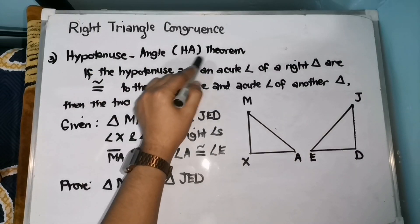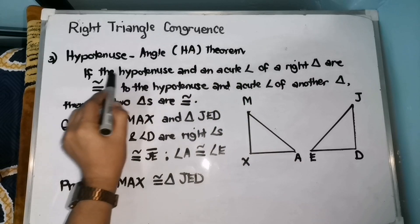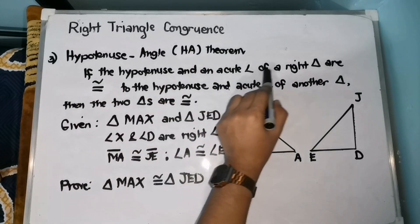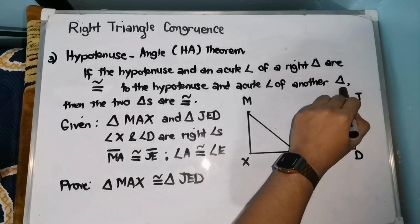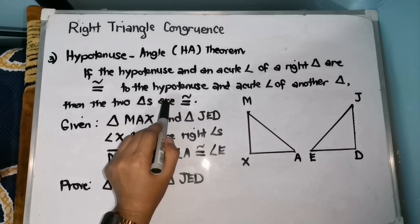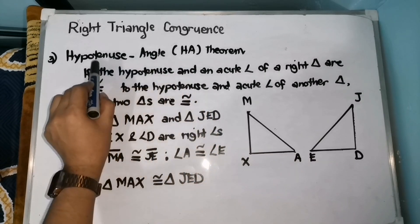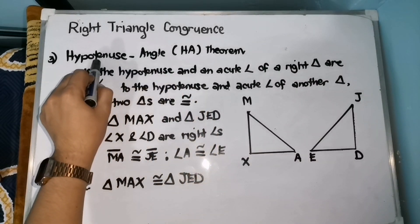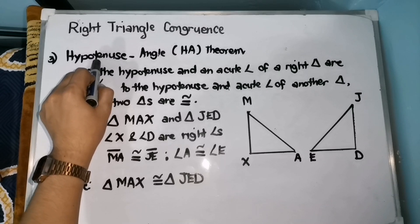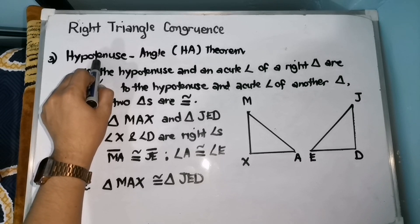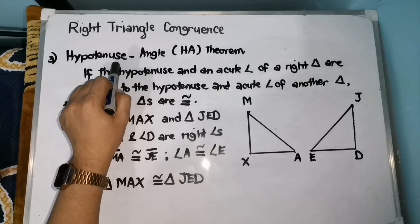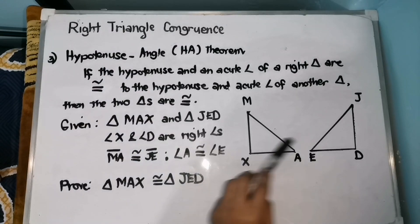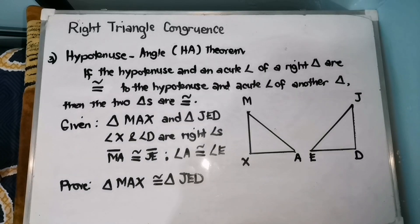The third theorem is the Hypotenuse-Angle or HA theorem. It states that if the hypotenuse and an acute angle of a right triangle are congruent to the hypotenuse and acute angle of another triangle, then the two triangles are congruent. The hypotenuse is the side opposite the right angle — it is the longest side of the given right triangle.